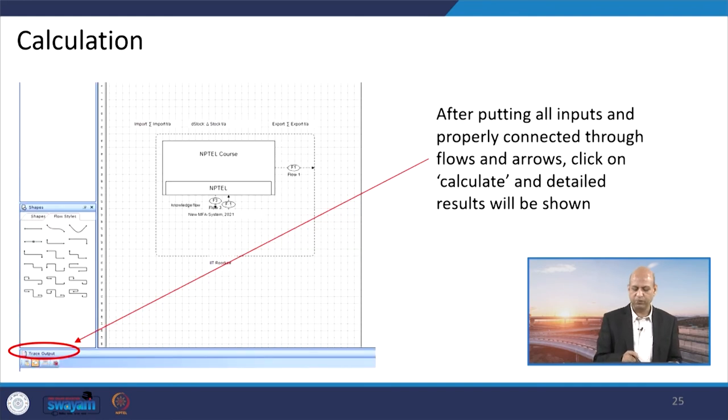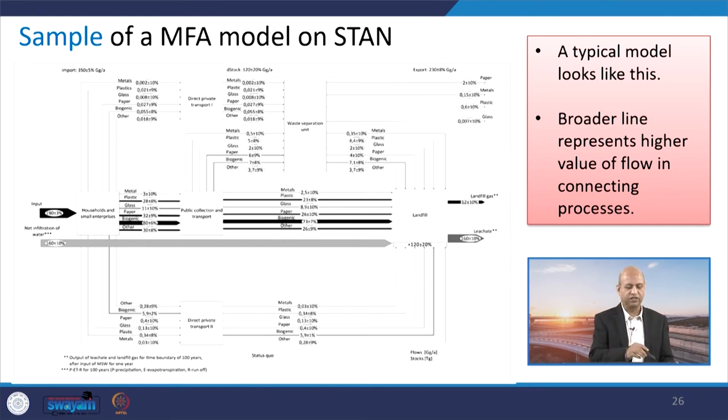Then for calculation purposes, we go here and the trace output, then we can see whatever calculations are there. And ultimately, this kind of sample material flow analysis model is created by this STAN tool. You can see different values, different names of the processes or flows, and the broader lines represent higher value of the flow. According to thickness of the lines may also vary depending upon their values, and this is very simple, easy to read, and very nice model.